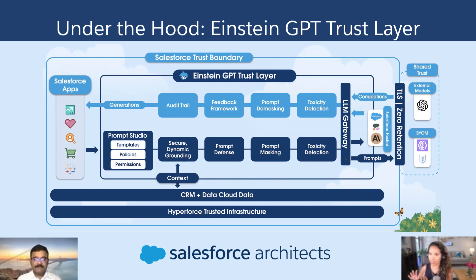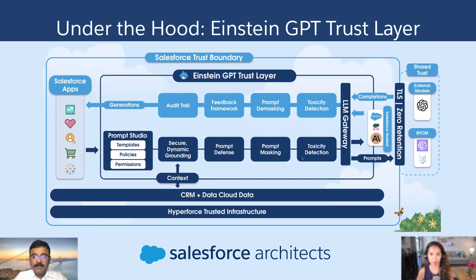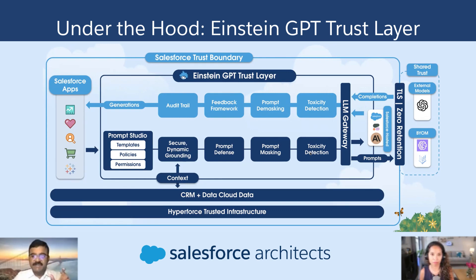Now let's move to toxicity detection and dig into how that actually works. So, as you can see, even during the pre-processing — even the prompts we generate by doing knowledge grounding and after masking all the sensitive information — we do toxicity detection on the prompts as well. This will take care of making sure our prompts have the necessary hygiene required: there is no discrimination or bias built into the prompt itself. It's similar to best practices in coding, like doing input validation and output validation. Prompts will go through this toxicity detection.